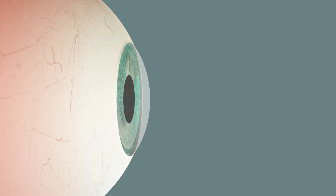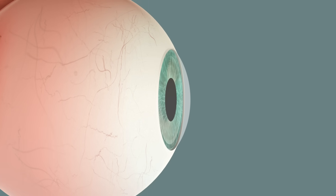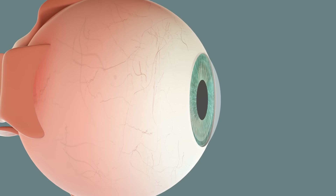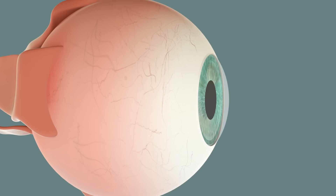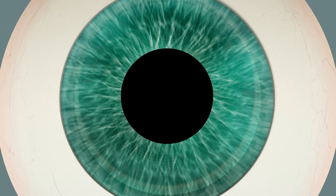The cornea is a transparent layer that helps our eye to focus on objects. It is a very important part of the eye, but it's hardly visible because the cornea is a semi-transparent tissue.